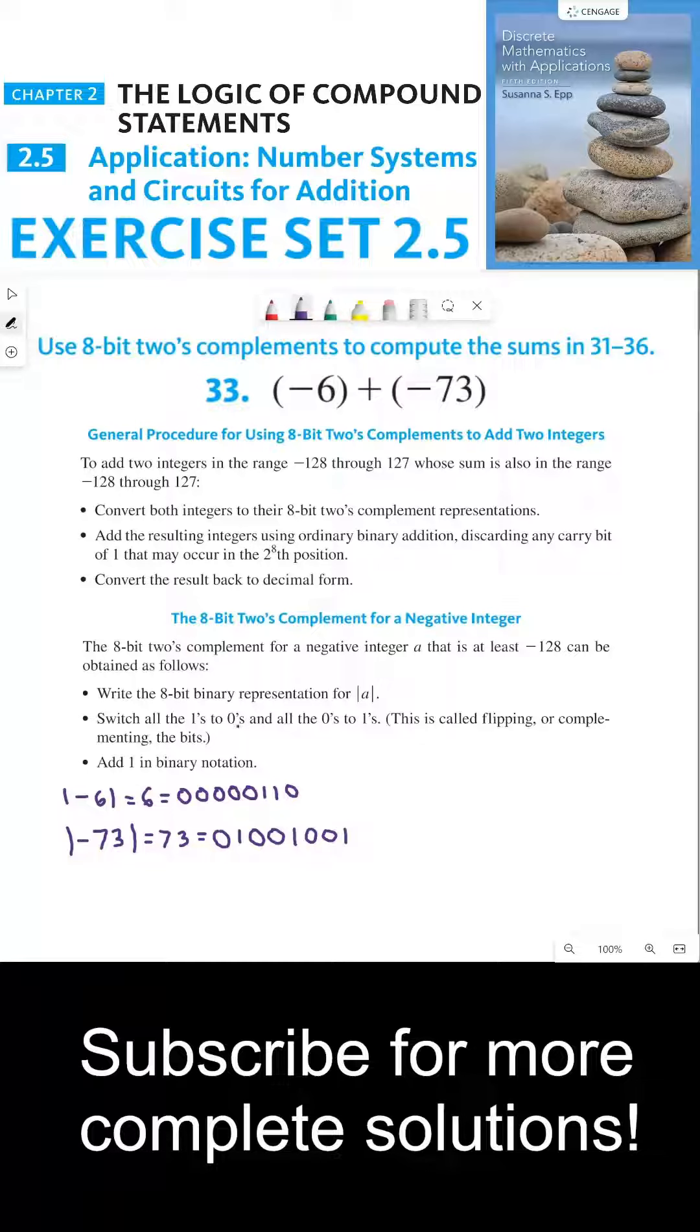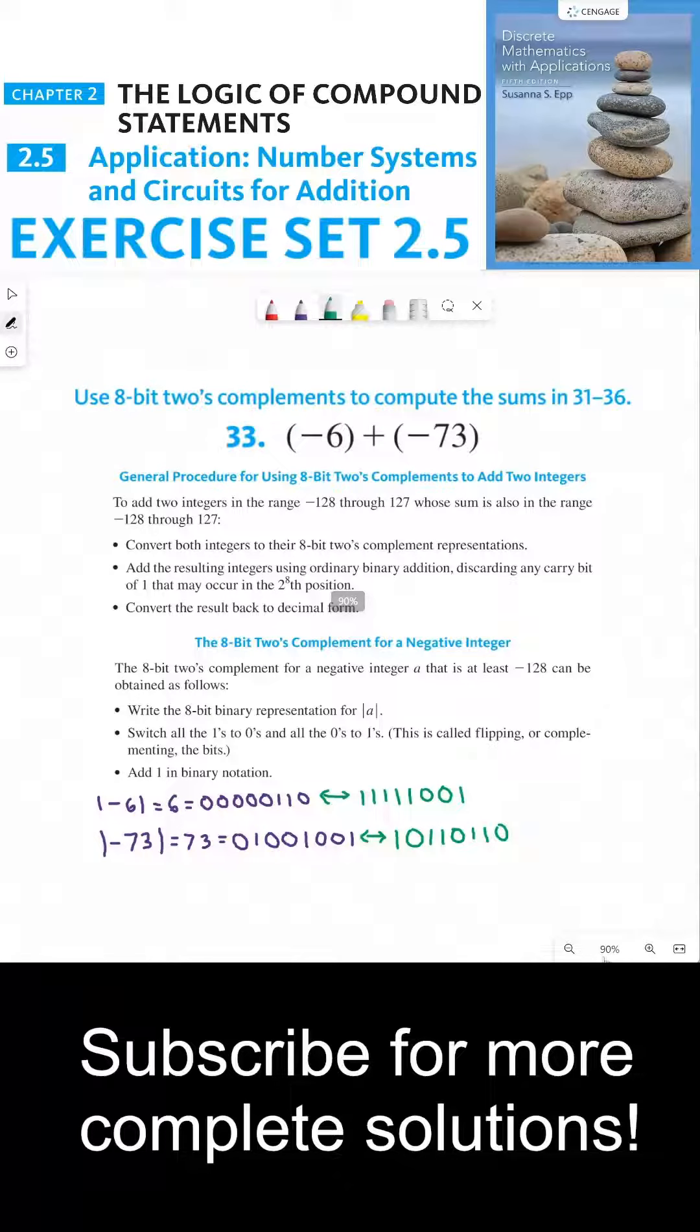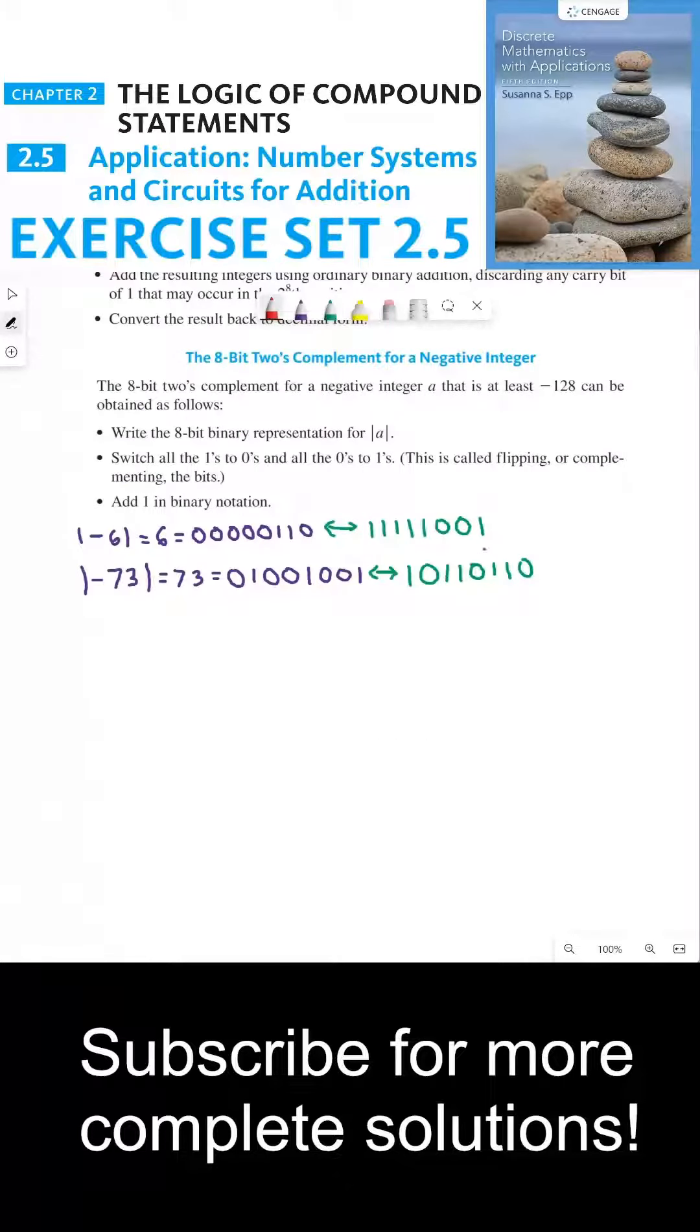Next, we need to switch all the 1's to 0's and all the 0's to 1's for both of these numbers. After we switch all the 1's to 0's and 0's to 1's, we need to add 1 in binary notation. So if we add 1 to the first number here, 11111001, we'll get 11111010.